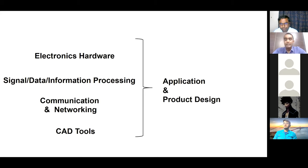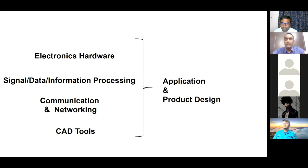From institute to institute there may be some variations. For example, in an electrical engineering course there may be more focus on electrical motors, transmission lines, and electricity management, with less emphasis on communication or CAD tools. When you talk about electronics and communication, the hardware part and the communication, signal processing, and data processing parts are very much part of the UG curriculum. At the PG level there are different specializations for each.